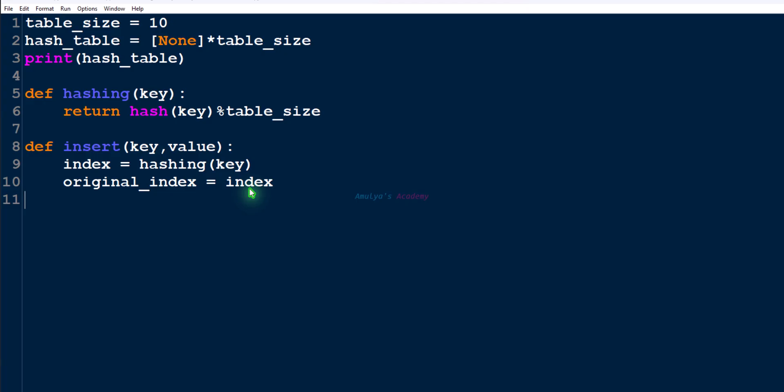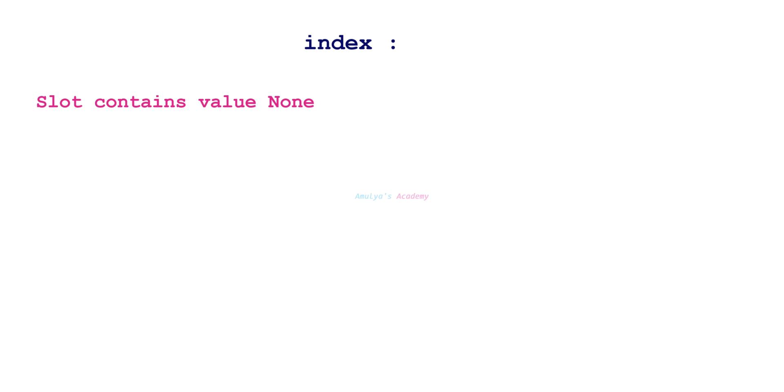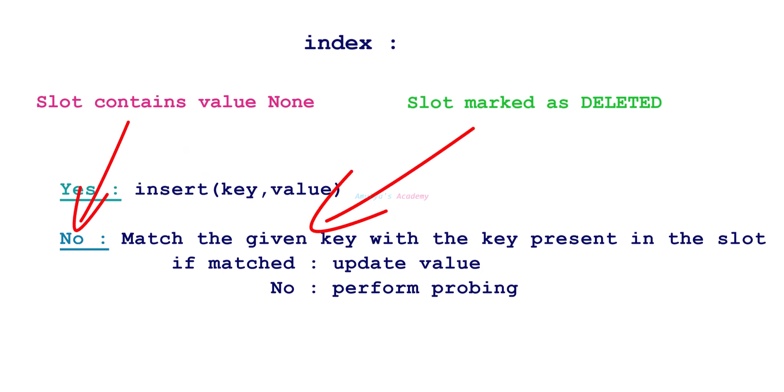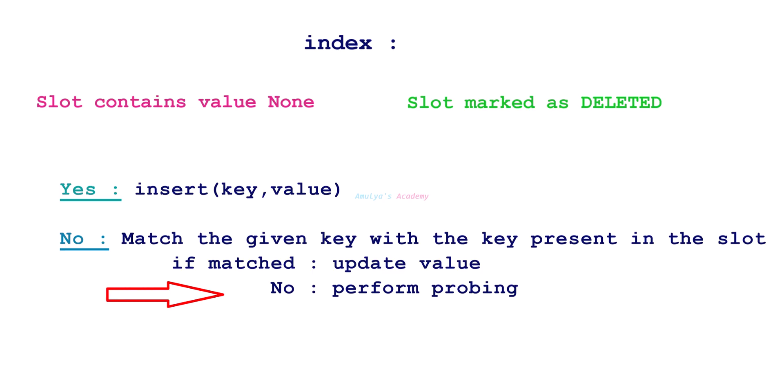We are using the open addressing method and will use linear probing or quadratic probing. While performing probing we may lose the original index, so we store it in another variable. After finding the index, if that slot contains None then it is empty and we can insert the key-value pair. If the slot is marked as deleted, we can also insert there. If both conditions are false, a key-value pair already exists in that slot, so we compare the given key with the key in that slot. If a match is found, update the value. If keys don't match, we need to perform probing.